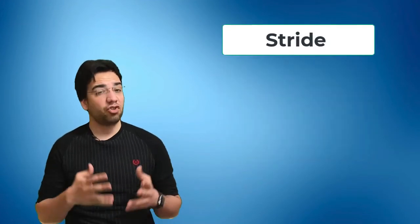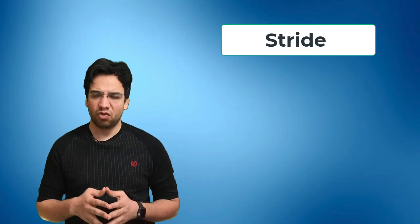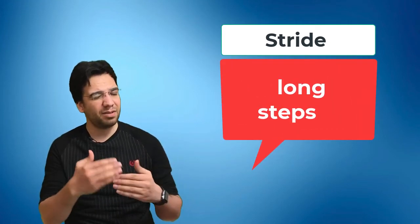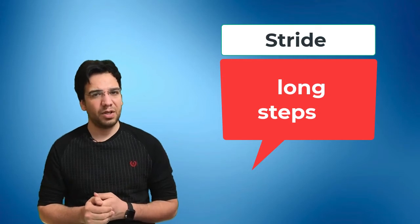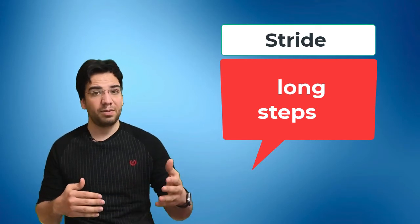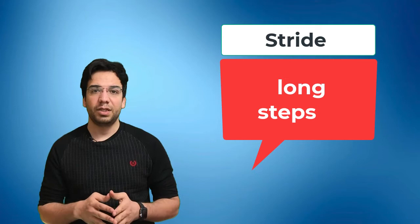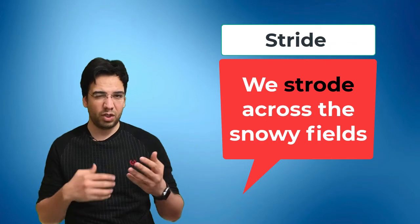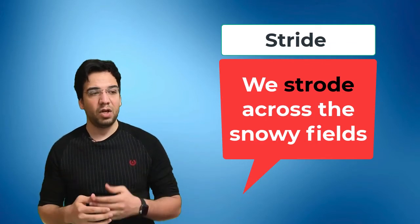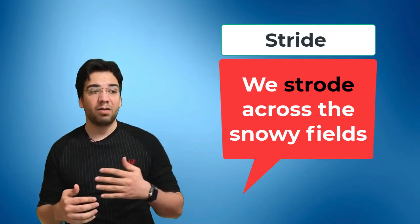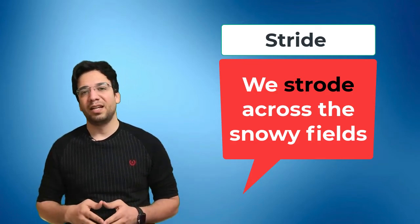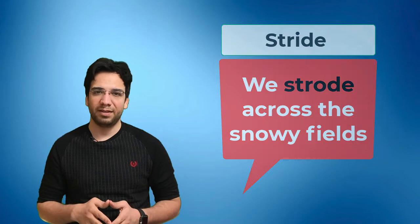Word number three is stride. Stride means to walk with long steps in a particular direction. For example, we strode — strode is the past tense of stride — we strode across the snowy fields.